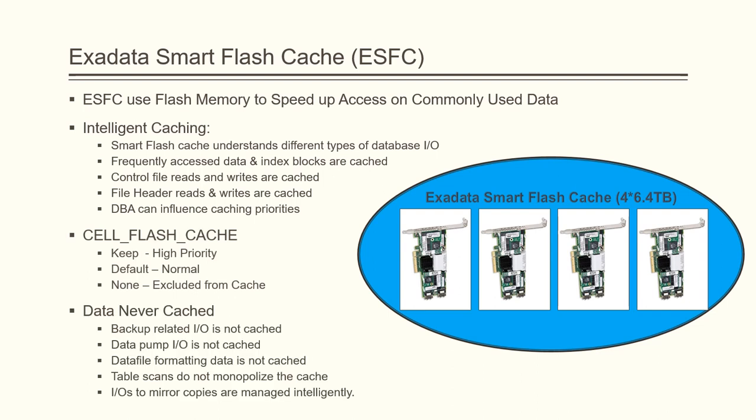There are certain types of data that are never captured into ESFC. First, backup-related IOs such as RMAN data are never kept in the Exadata Smart Flash Cache. Data dump IOs are also never captured into ESFC. Additionally, data file formatting data, table scans that do not monopolize the cache, and IOs to mirror copies are also managed internally. Using this intelligent caching, the space available on the Exadata Smart Flash Cache is efficiently utilized to hold only the relevant data.